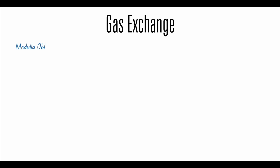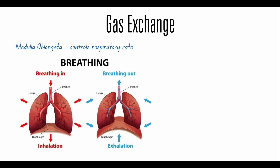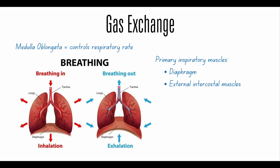Now let's talk about gas exchange. Breathing, or specifically respiratory rate, is controlled by the medulla oblongata. During this process, the diaphragm and intercostal muscles contract — moving down to create more space and allow air to come in. The primary inspiratory muscles are the diaphragm and the external intercostal muscles. This rhythmic process of moving air in and out of the lungs is called ventilation.